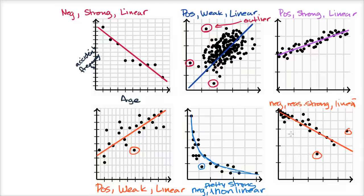Hopefully this makes you a little bit familiar with some of this terminology. It's important to keep in mind this is a little bit subjective — there'll be some cases that are more obvious than others. Oftentimes you want to make a comparison: this is a stronger positive linear relationship than this one over here, because most of the data is closer to the line. This one is more non-linear than linear. It often comes down to making a comparison or a subjective call on how to describe the data.